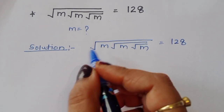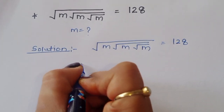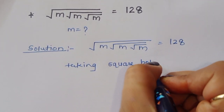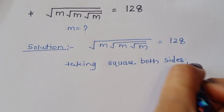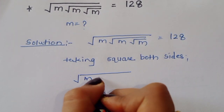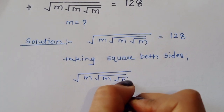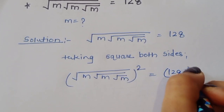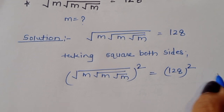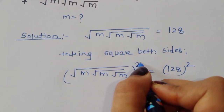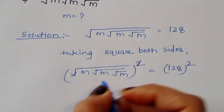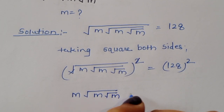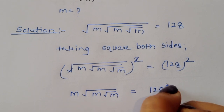We can do one thing here: we can square both sides. So taking square of both sides, then we will get square root of m times square root of m times square root of m, the whole square, is equal to 128 squared. The square root squared cancels, so we get m times square root of m times square root of m is equal to 128 squared.